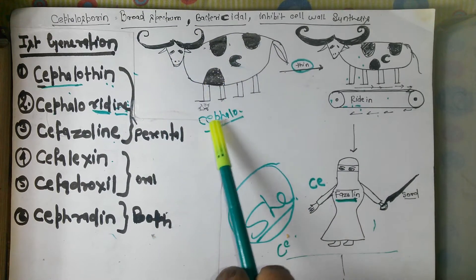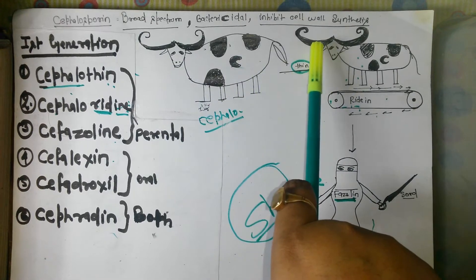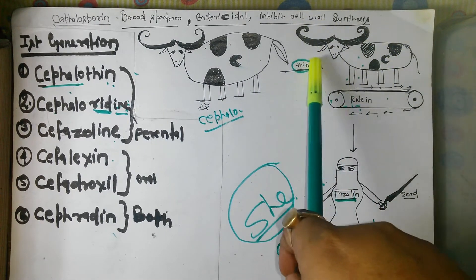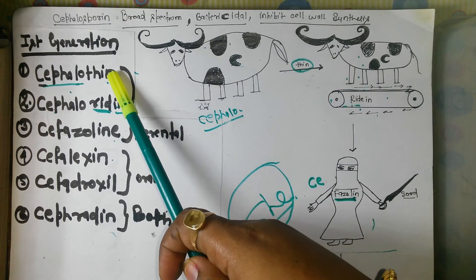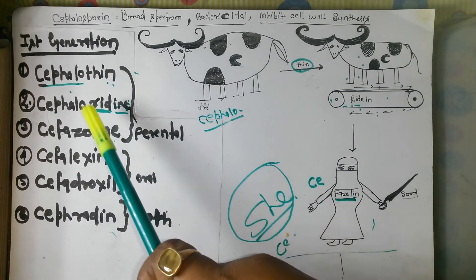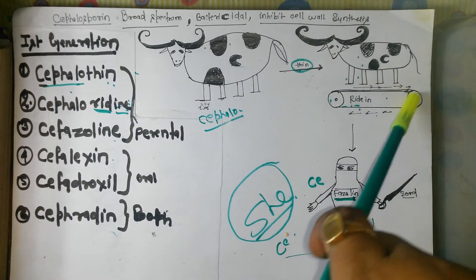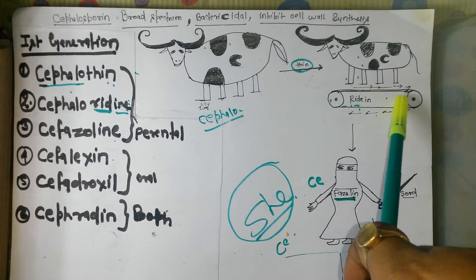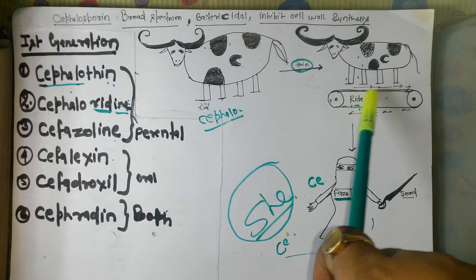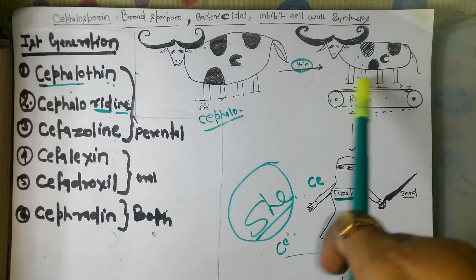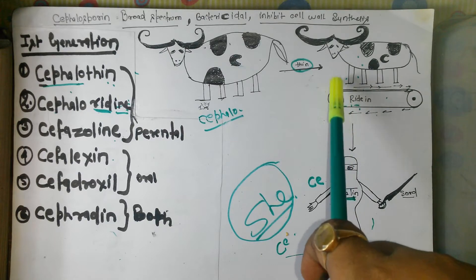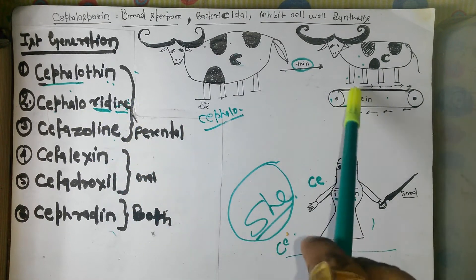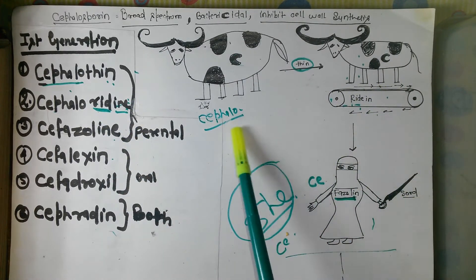So the thin version he becomes is 'Cephalothin' — the first drug. For the second drug, to become thin he has to ride on a treadmill. This is the treadmill and he is riding on it — so 'Cephaloridine': Cifalo riding on the treadmill.